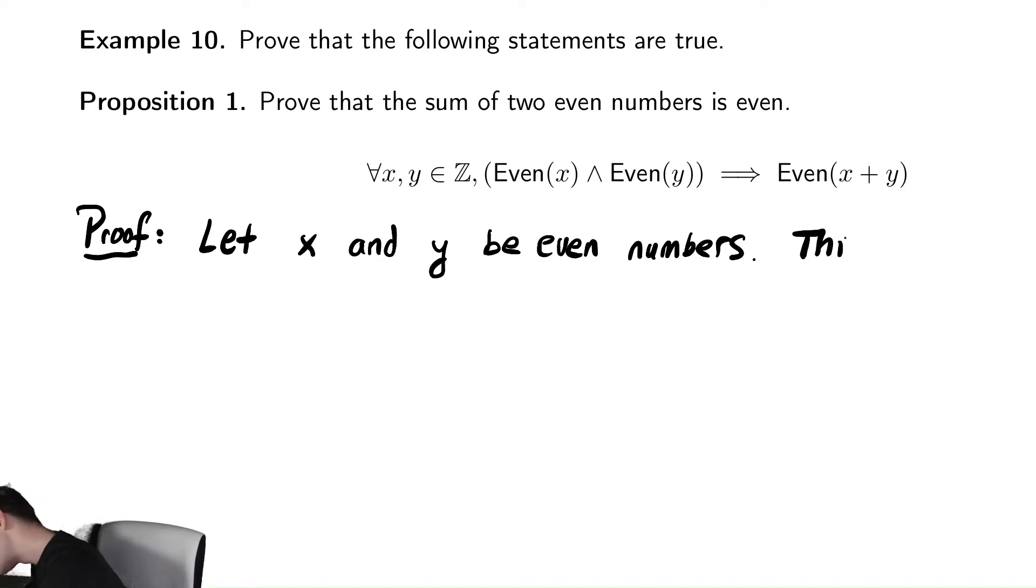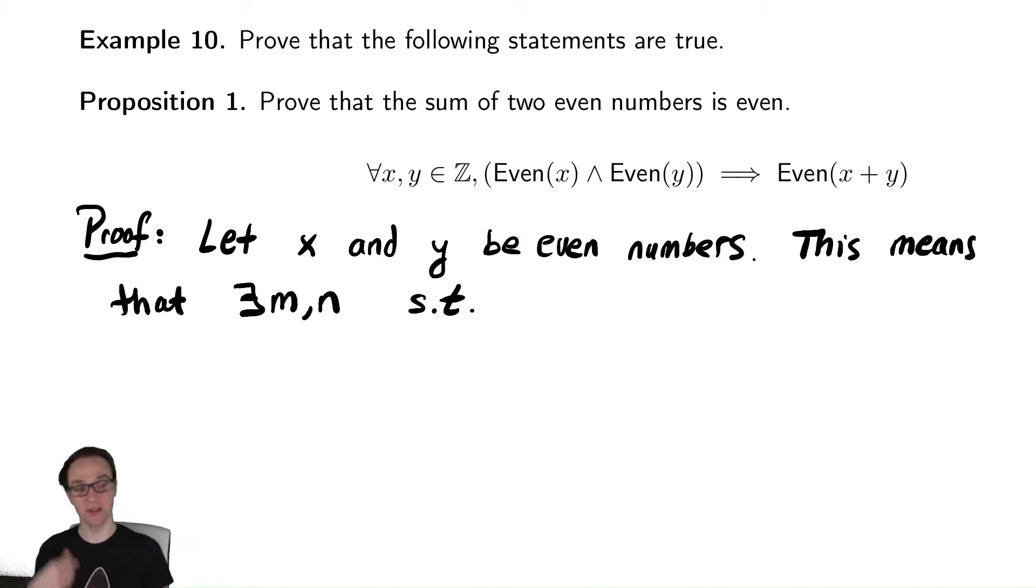So since x and y are even numbers, this means that there exists two integers m and n such that... I'm using some abbreviated notation here that we used with our predicate logic, and s.t. is a common abbreviation for 'such that.' These integers exist.